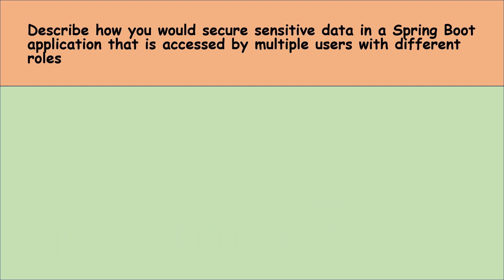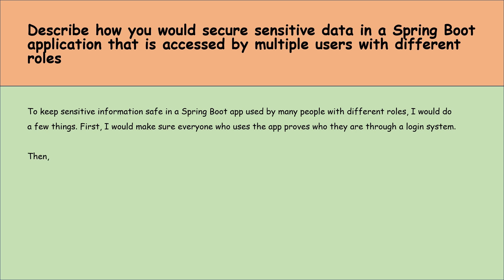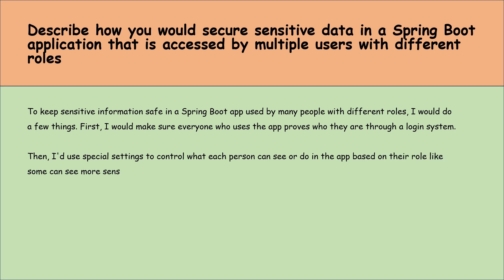Let's move to the next question: describe how you would secure sensitive data in a Spring Boot application accessed by multiple users with different roles. To keep sensitive information safe, first I would make sure everyone who uses the app proves who they are through a login system. Then I would use role-based access control to determine what each person can see or do in the app — some can see more sensitive content while others cannot.